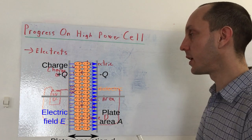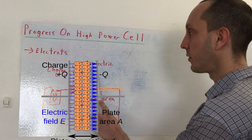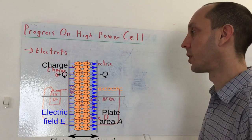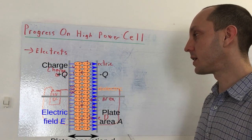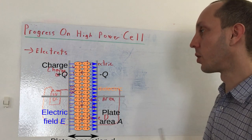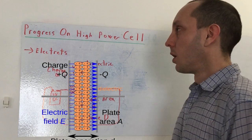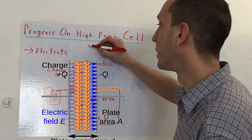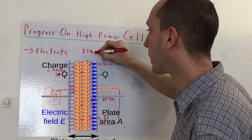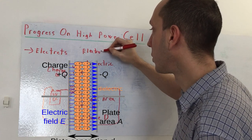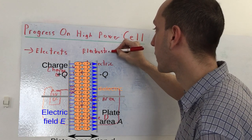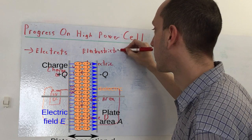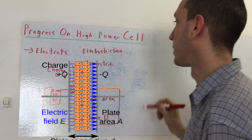What changes with the electret is that we use a very special dielectric. This is the electret, so this is a different effect which I'm going to get into next here. In an electret we have an interesting effect called electrostriction.